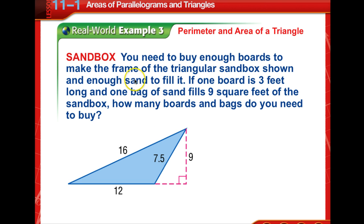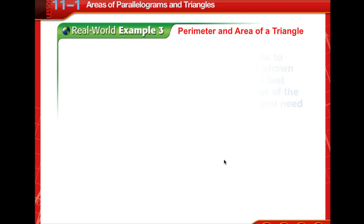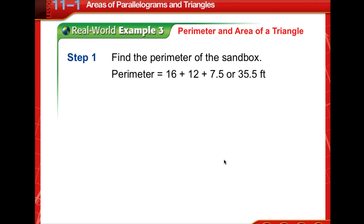Okay, we've got a real world example. You need to buy enough boards to make the frame of the triangular sandbox shown and enough sand to fill it. If one board is three feet long and one bag of sand fills nine square feet of the sandbox, how many boards and bags do you need to buy? Again, I would suggest you draw this figure before you move forward so that you can have some example to go back as we're working the problem. So we find the perimeter of the sandbox. We simply add the measures of all three sides to get 35.5 feet.